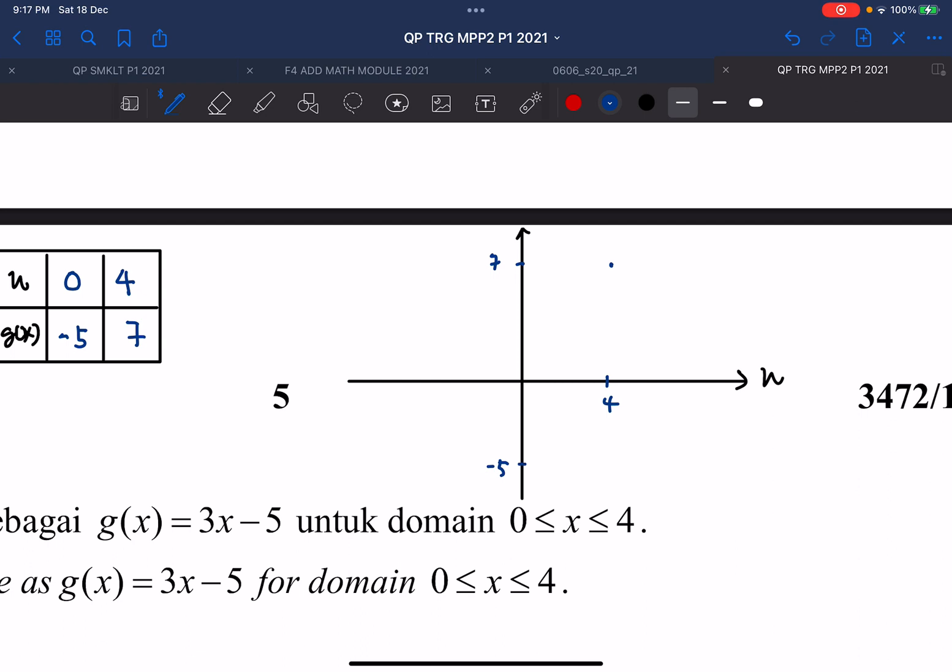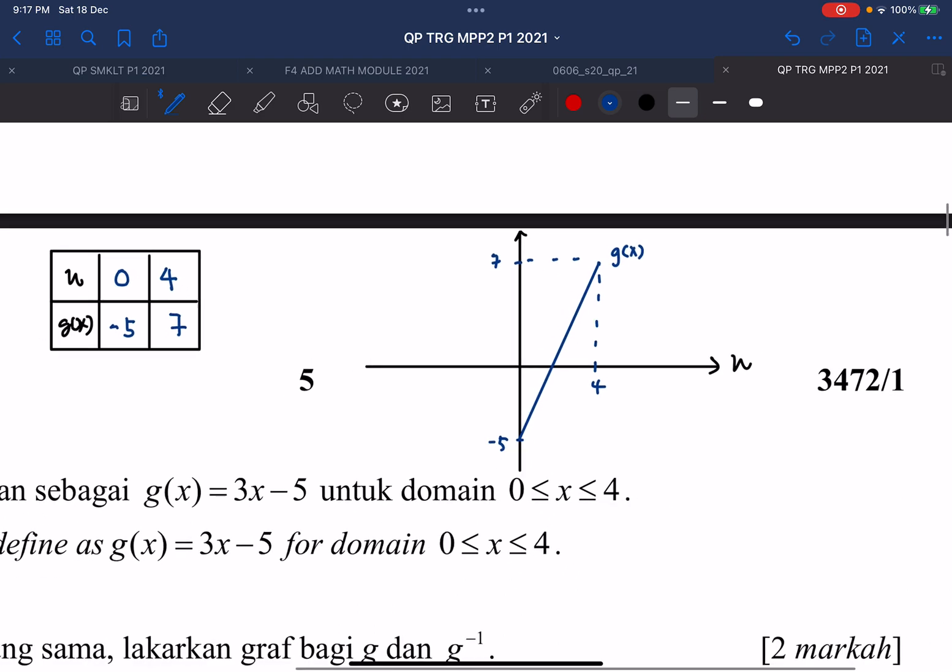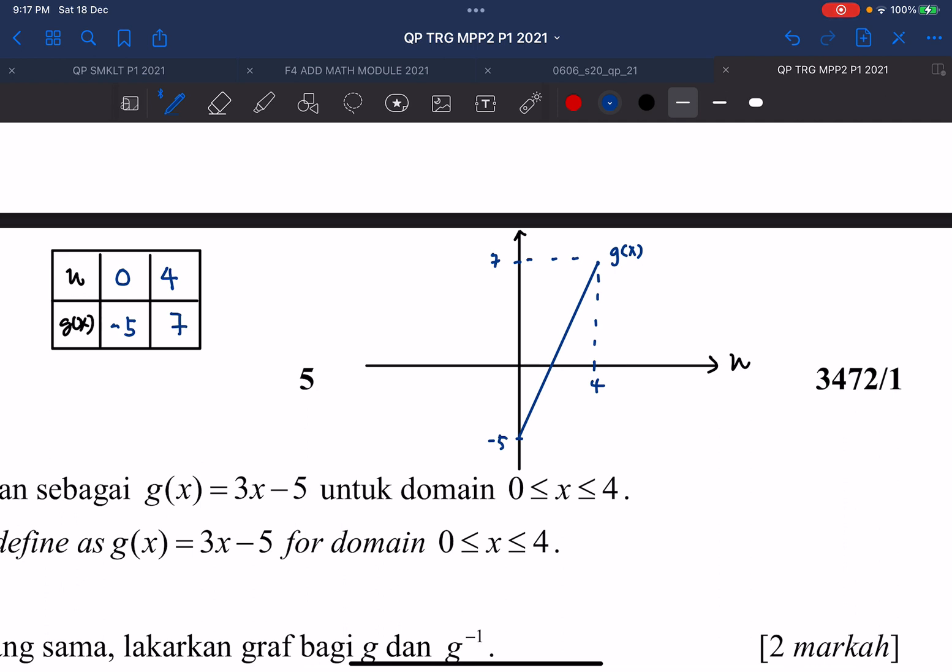So it's from negative 5 to 7, this is my Gx graph. So in order to sketch the G inverse graph, you actually no need to know about the functions and no need to find a new set of coordinates.